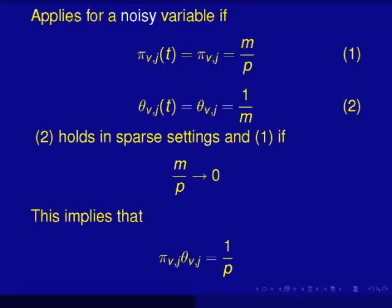Suppose that V is completely unrelated to the outcome. Then it turns out that under these two conditions, that both pi and theta would be independent of the terminal node that we're looking at. And it also turns out that condition two will automatically hold in a sparse setting. So if you have a high-dimensional sparse scenario, then condition two holds. And condition one will hold if M divided by P goes to zero.